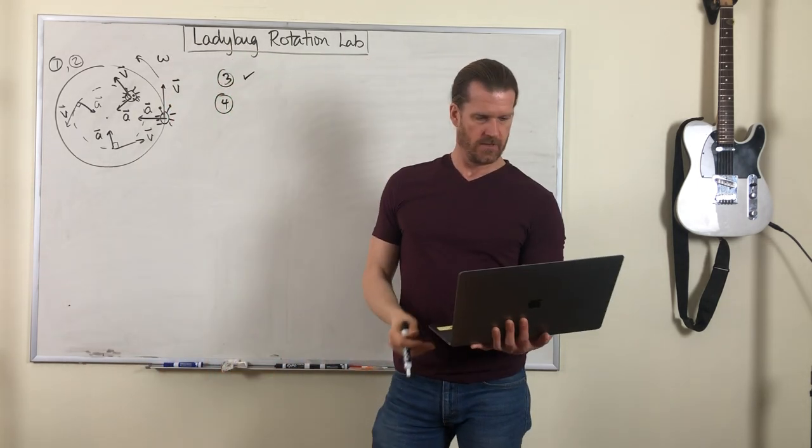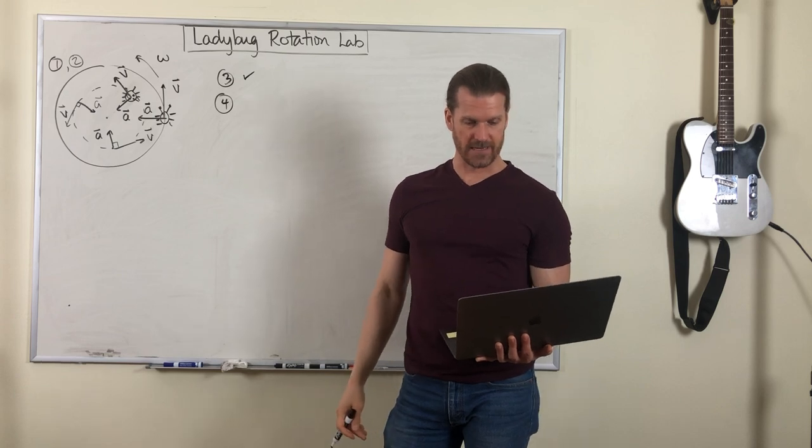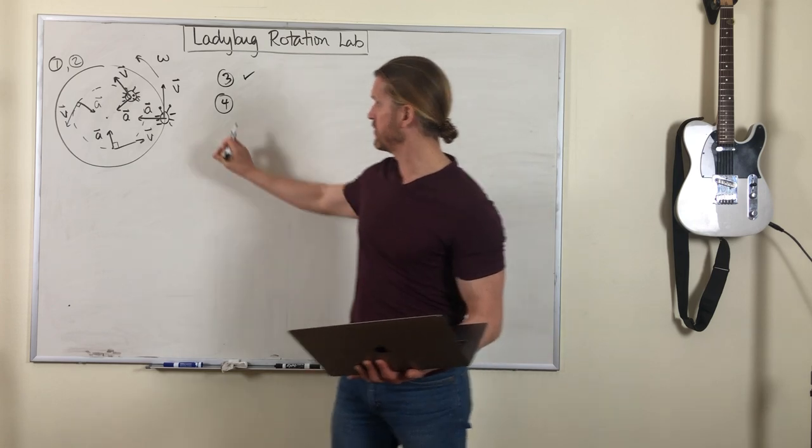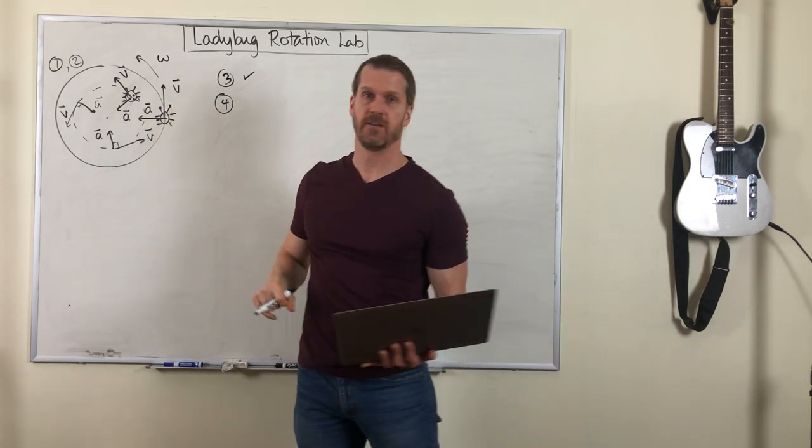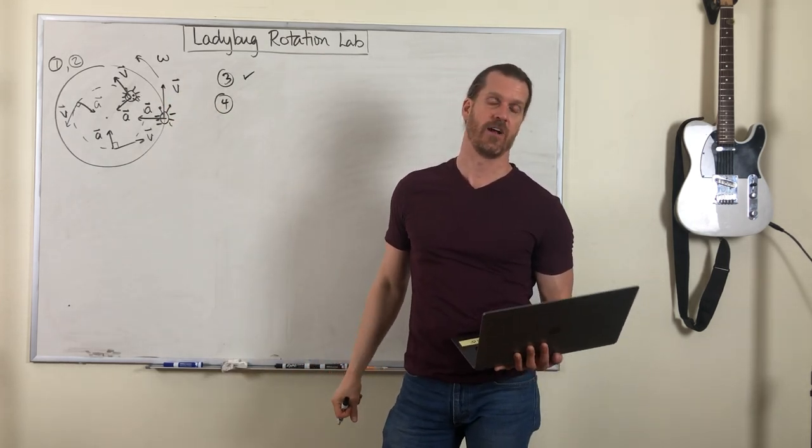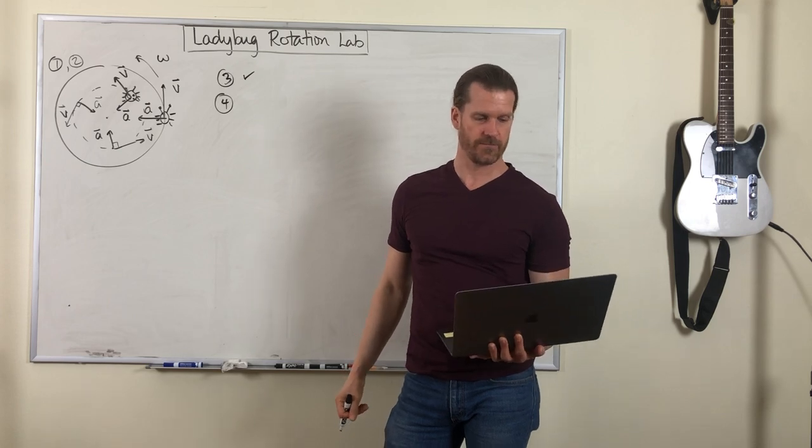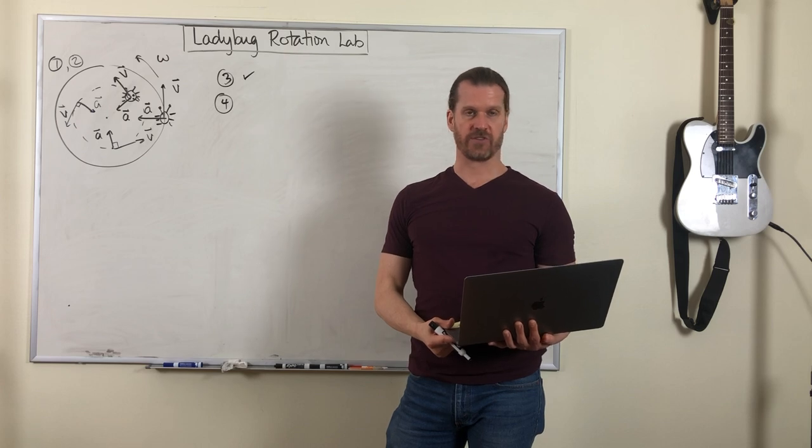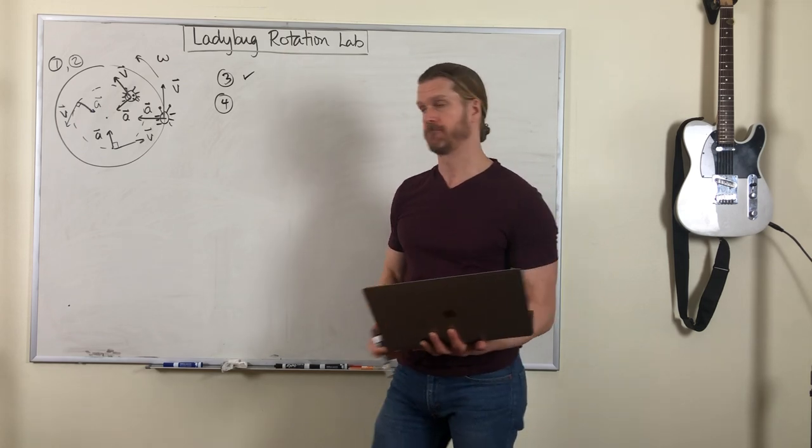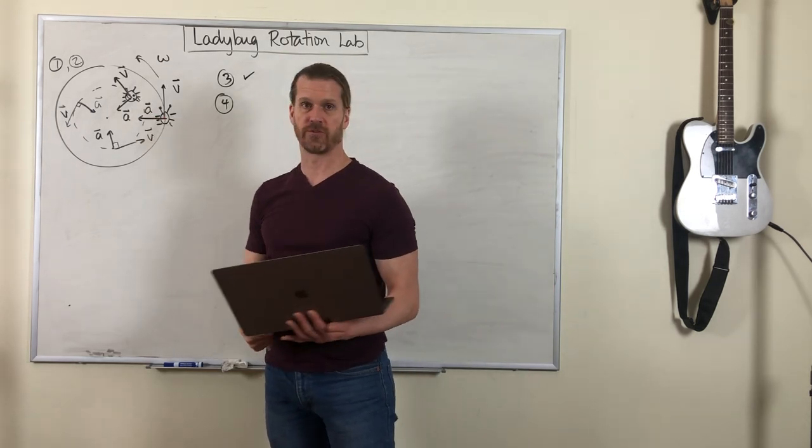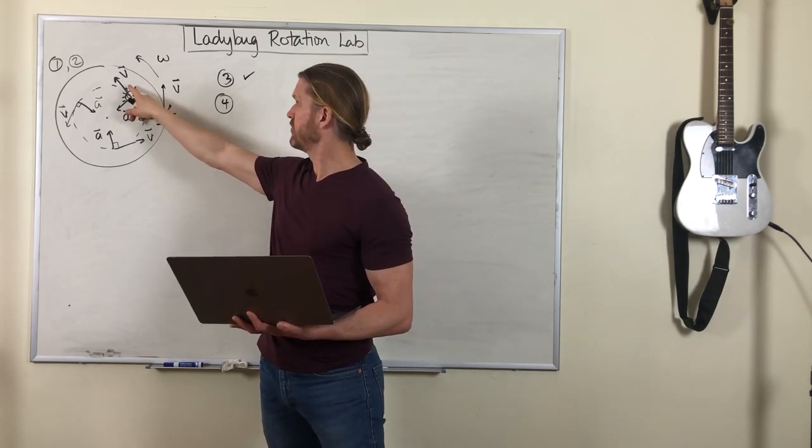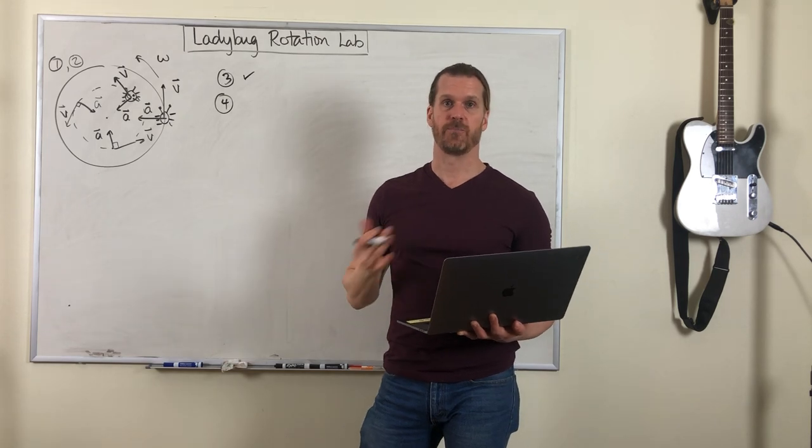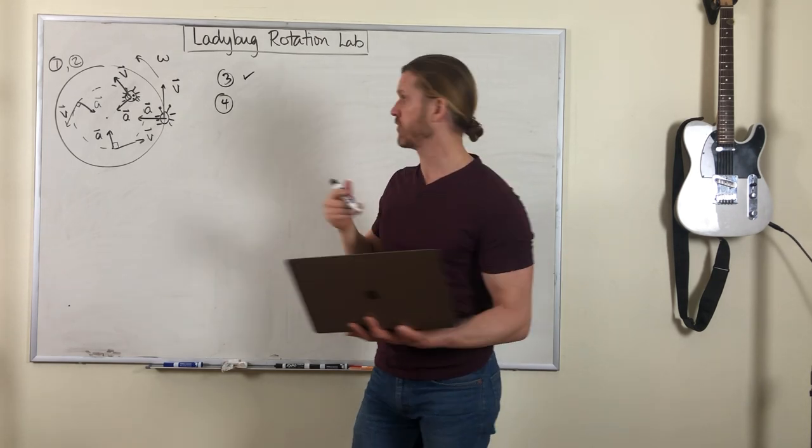How is tangential speed represented in ladybug revolution? Well, the tangential speed is represented by the length of that velocity vector at each point. Do all points on a rigid object have the same tangential speed? No, they don't. That's what we explored in questions one and two. We saw that this tangential speed increases as you go farther out. It depends on the radius of the circle.